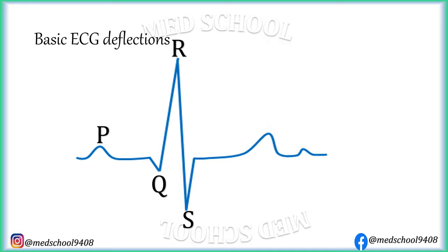QRS complex is smooth without any notching or slurring and tips are pointed. Next wave is T wave. It is small, rounded, with blunt tip. It is asymmetric in shape with the descending limb having a sharper slope than the ascending limb. It represents the later part of ventricular repolarization. U wave is a small, rounded wave found immediately after T wave.